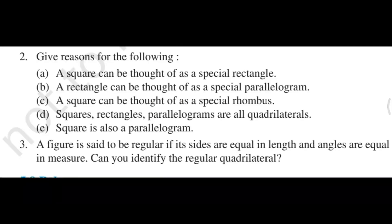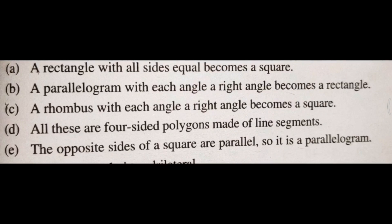Part D: square, rectangle, and parallelogram are all quadrilaterals. Why? Because a quadrilateral is a figure made up of four straight line segments. All the given figures — square, rhombus, rectangle, parallelogram — are made up of four line segments, and that is why we call them quadrilaterals.